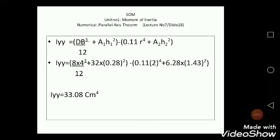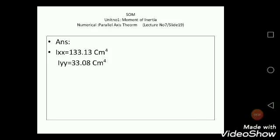33.08 cm⁴. So the final answer we are getting for the composite section: Ixx (that is moment of inertia about the centroid of the composite section) is 133.13 cm⁴, and Iyy is equal to 33.08 cm⁴.